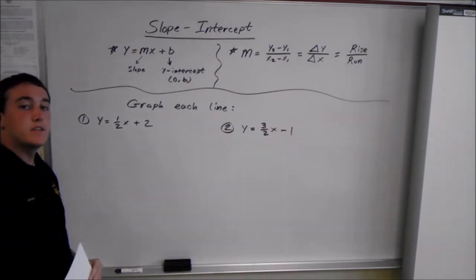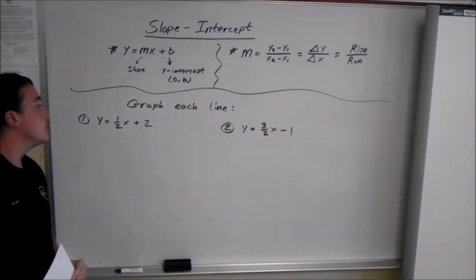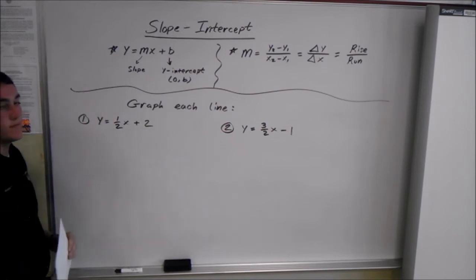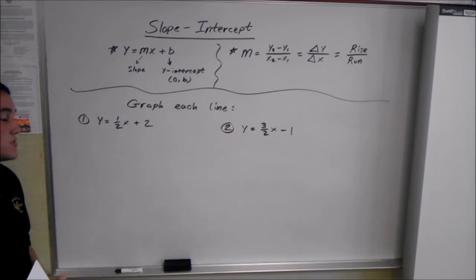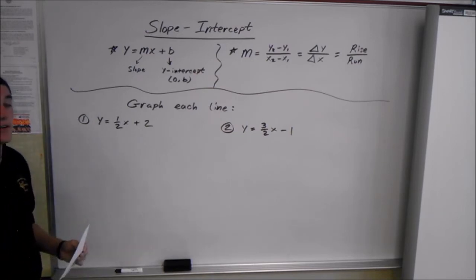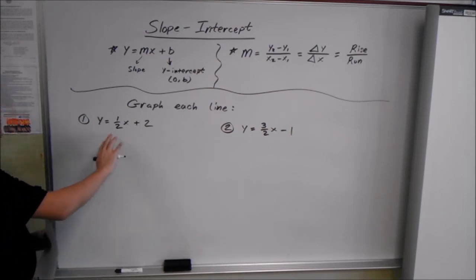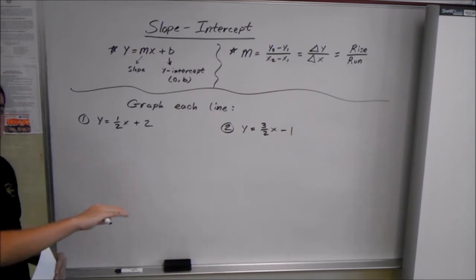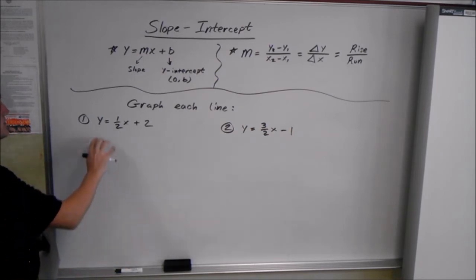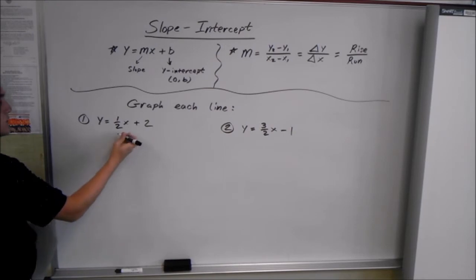Next we need to learn about graphing lines using the slope-intercept formula, y equals mx plus b. Sometimes they won't give it to you in that form, so you have to solve for y and figure it out yourself. But for all my examples, I'm going to give you the formula right away.